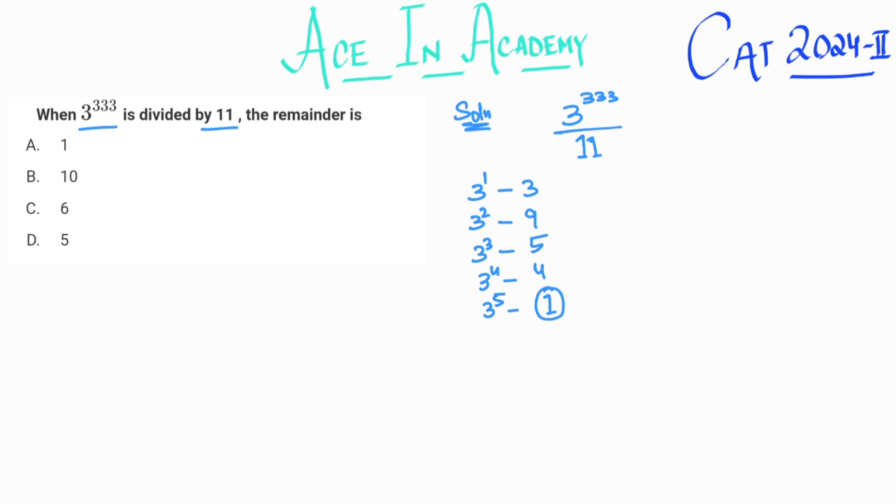So we have got our magic number, that is 1. And now we can replace everything in terms of 3 raised power 5. So what I can write is 333 is nothing but 3 plus 5 into 66. So if you calculate it, it is coming as 333. So what I can write 3 raised power 333 as 3 raised power 3 into 3 raised power 5 whole raised power 66 divided by 11.